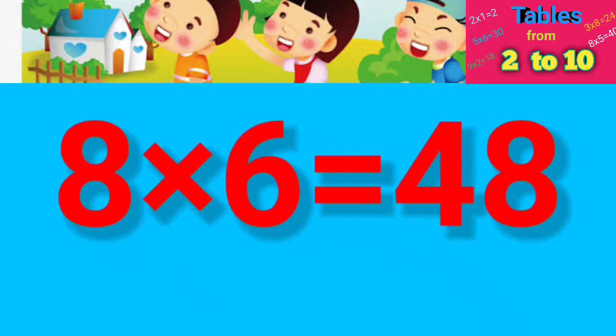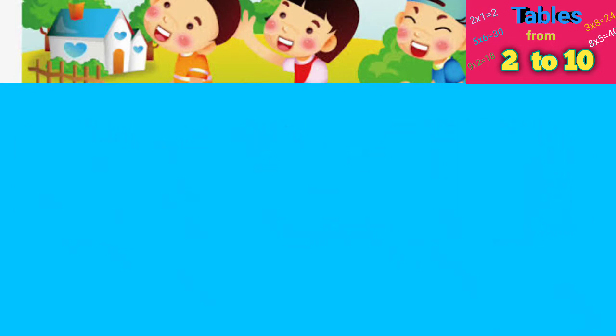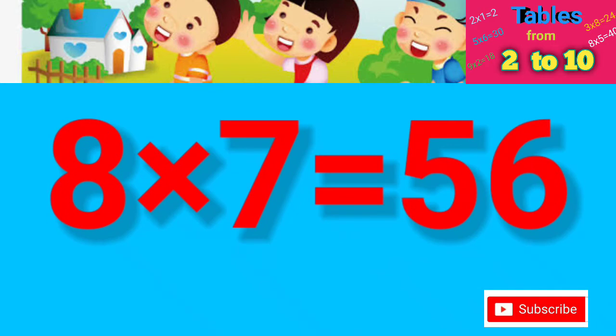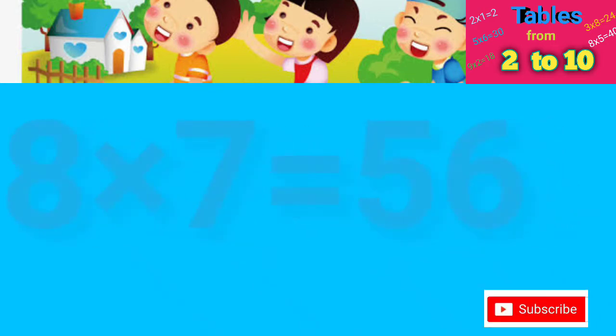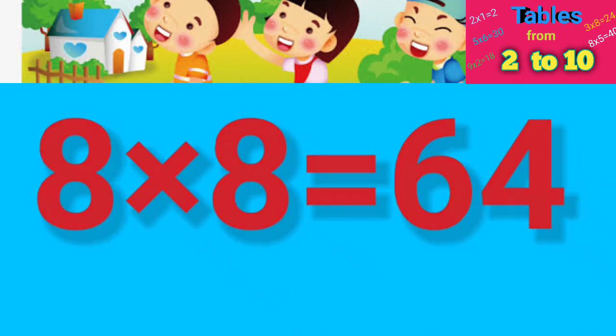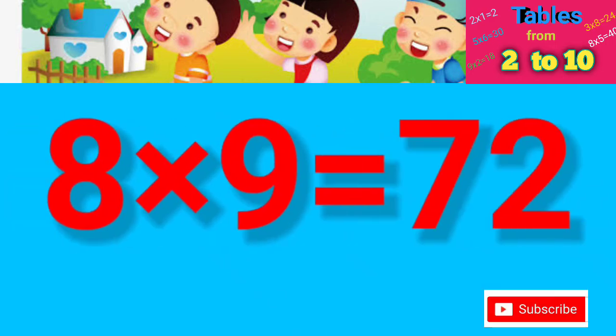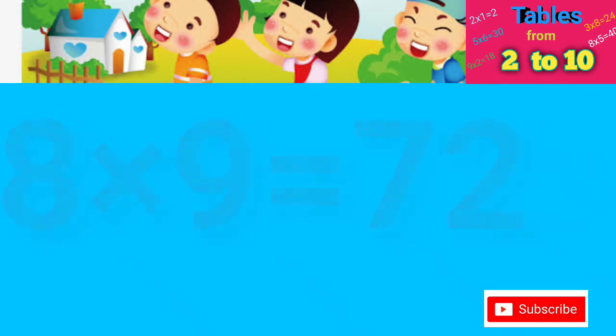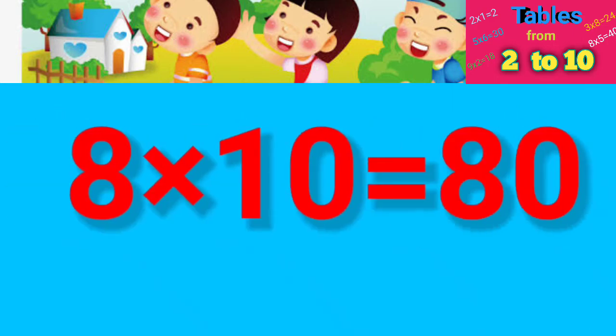Eight six's are forty-eight, eight seven's are fifty-six, eight eight's are sixty-four, eight nine's are seventy-two, eight ten's are eighty.